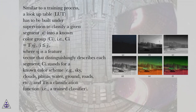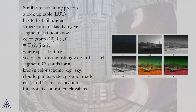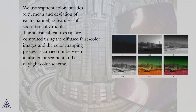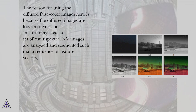Similar to a training process, a lookup table (LUT) has to be built under supervision to classify a given segment sj into a known color group c, i.e., c equals t(sj), where sj is a feature vector that distinguishingly describes each segment. C stands for a known color scheme such as sky, clouds, plants, water, ground, roads, etc., and t is a classification function, i.e., a trained classifier. We use segment color statistics — for example, mean and deviation of each channel — as features, yielding six statistical variables. The statistical features sj are computed using the diffused false color images, and the color mapping process is carried out between a false color segment and a daylight color scheme. The diffused images are used here because they are less sensitive to noise.